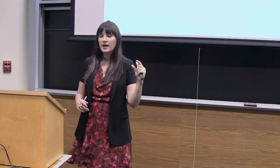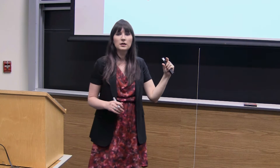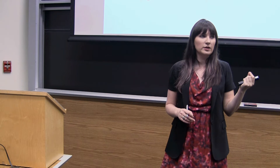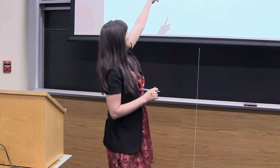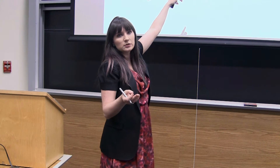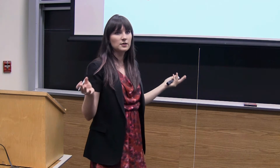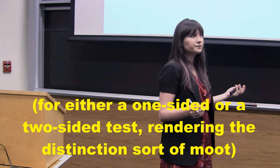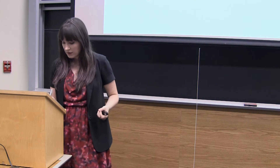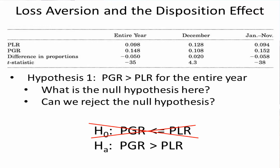When we have a test statistic for that difference in proportions, we can reject the null hypothesis when the magnitude of that test statistic is greater than two — technically 1.96. In any case, negative 35 is very much bigger in magnitude than two, so this is statistically significant. So far we're looking good: our very basic result shows evidence for the disposition effect, and we can reject our null hypothesis in favor of our alternative hypothesis.